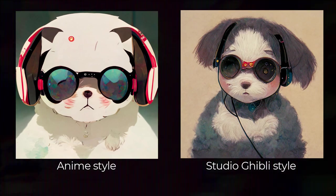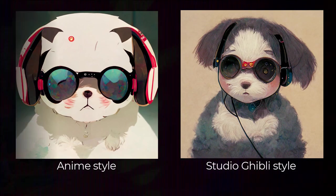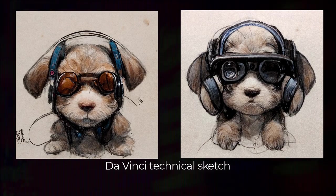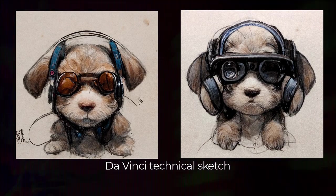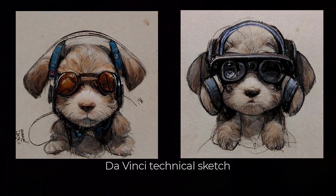You can also take it to another level and include artist names. So if you type in 'da Vinci technical sketch,' you can get something like this. You can get a lot of different results pretty quickly and easily just by using your imagination.